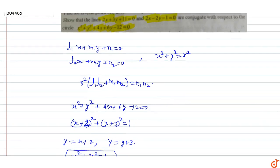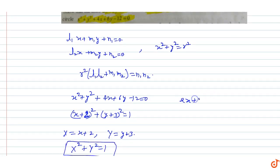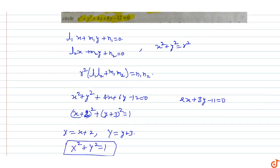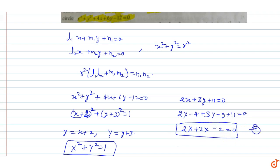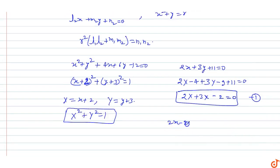For the first line 2x + 3y + 11 = 0, substituting x = X − 2 and y = Y − 3: 2(X − 2) + 3(Y − 3) + 11 = 0, giving 2X − 4 + 3Y − 9 + 11 = 0, which simplifies to 2X + 3Y − 2 = 0. This is the first line in the new coordinates.